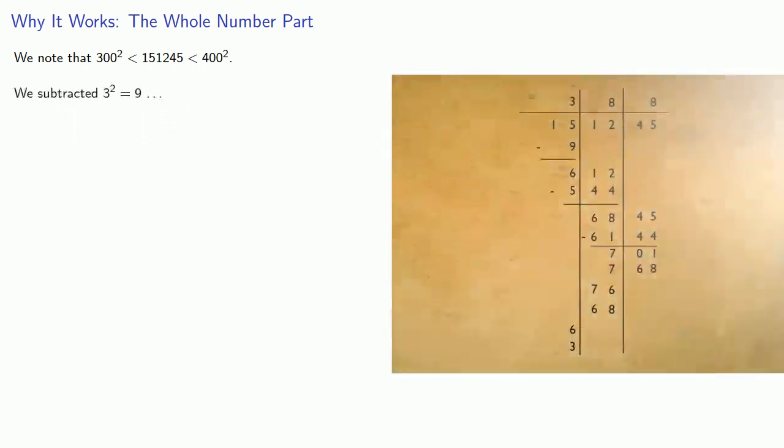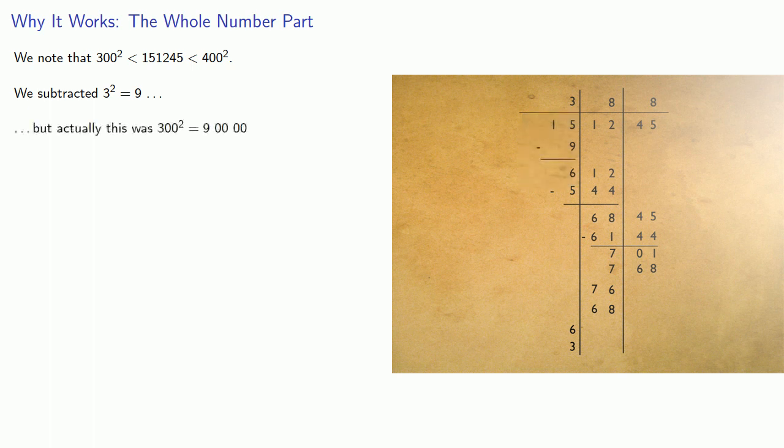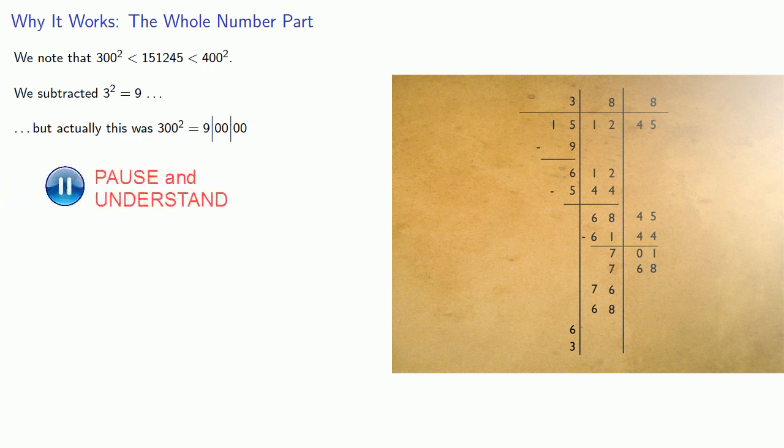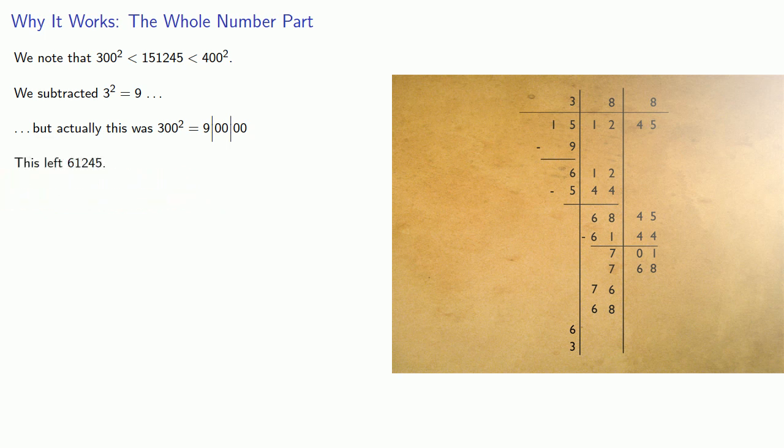We started by subtracting 3 squared, or 9. But this was in that third cycle. In fact, that 3 is really 300, and 300 squared is 90,000. Notice that if we split this number into cycles of two digits, we see that we really only need to subtract a 9 from the number in the leftmost cycle. This leaves 61,245.